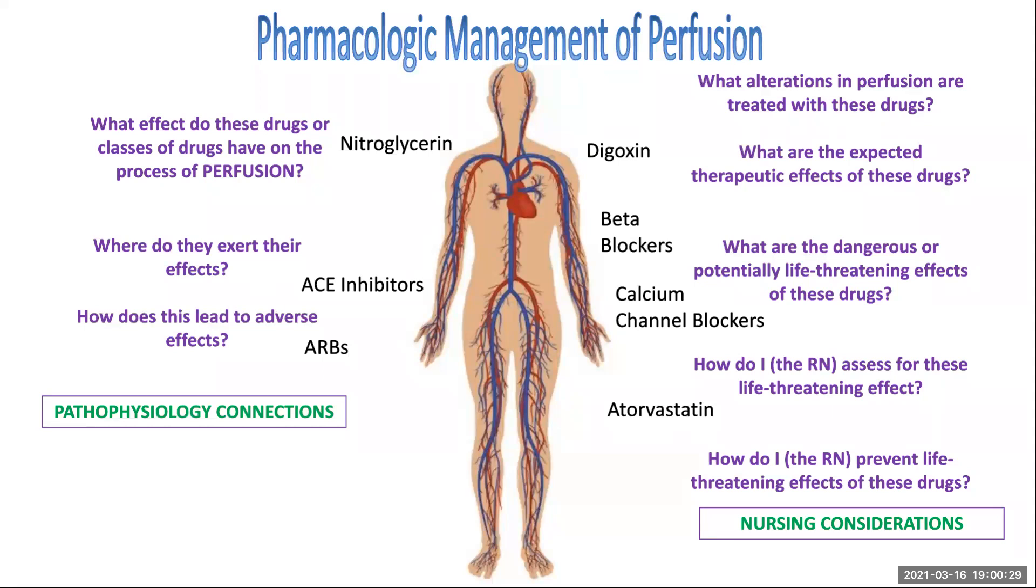Then you start to ask yourself, well, what are the dangers or potentially life-threatening effects of these drugs? And that leads you right back over to the platform where we said, how does this effect lead to an adverse effect? So what is the most potentially life-threatening thing that can happen when I give a beta blocker or when I'm giving digoxin? So the next question is, well, in order to practice safely and to not cause harm to the patient, how do I, the RN, assess for these life-threatening effects? How do I know if it's happening? How do I know if they have lost so much potassium or if their potassium is high? How do I know without just looking at labs, what other things might be happening with the individual?